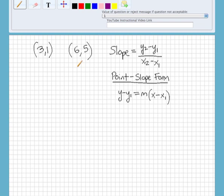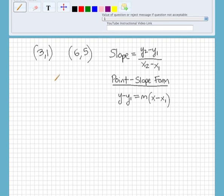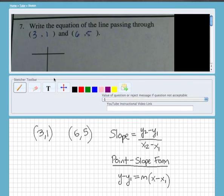The first thing you want to do is find the slope, because in order to find the equation of a line, we need two things: the slope and a point on the line.